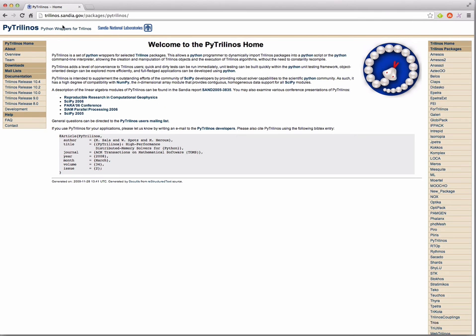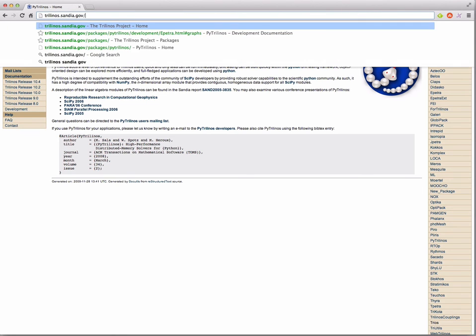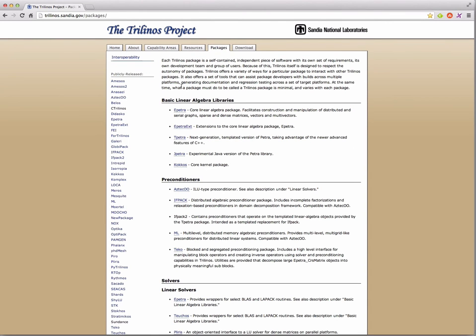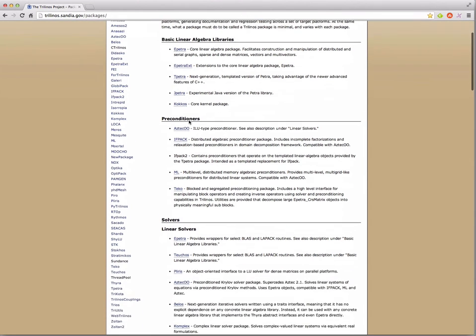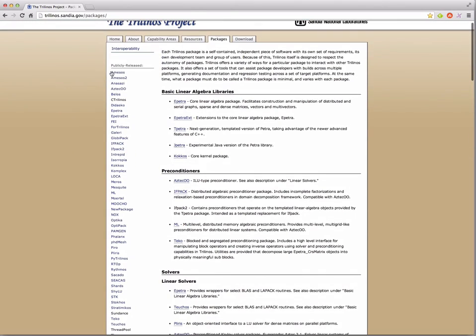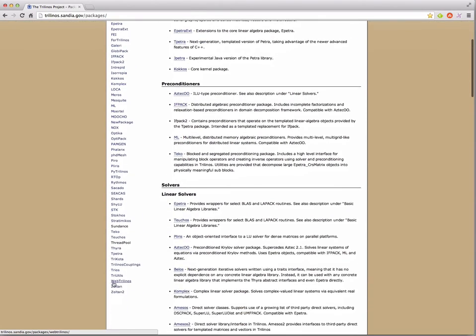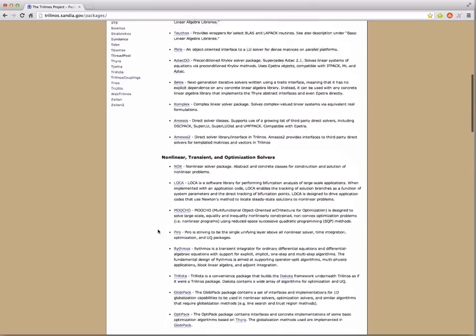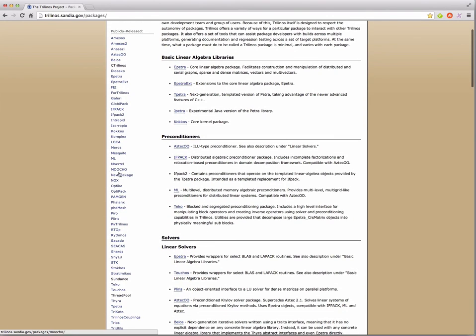This is actually PyTrilinos, but if you go to just Trilinos.Sandia.gov, then here's the main page. And if you click on packages, you'll get a full list with short description of all the packages. Also, here on the left side, these are all the packages that are part of Trilinos, all the libraries. And so there's short descriptions of each of them along the way. If you have one in particular that you'd like to know more about, say NOX, you can click on that.